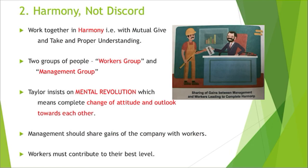To achieve harmony, management should share the company's profits with workers, and workers should contribute their best towards the organization. Taylor believes if the organization prospers, workers will prosper too, and vice versa. For example, workers' main objective is to earn as much as possible, and management's objective is to maximize production — both can be achieved in harmony. When workers produce more, production increases, revenue increases, and workers benefit in the long run.